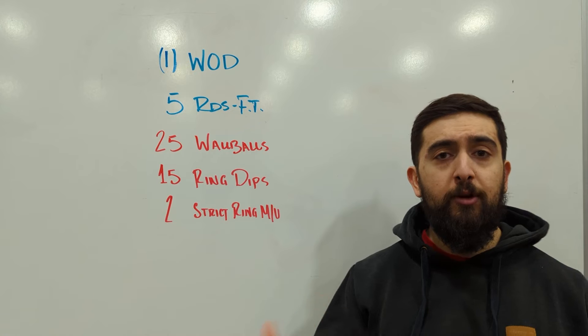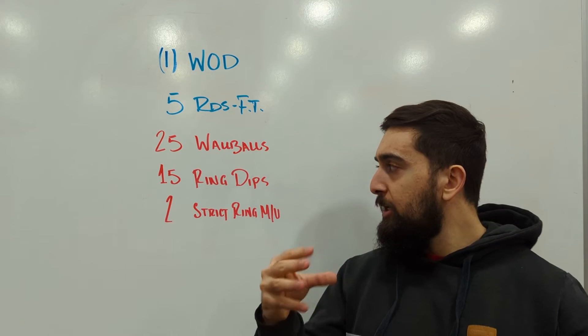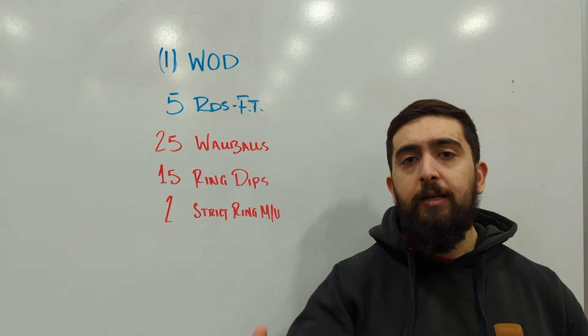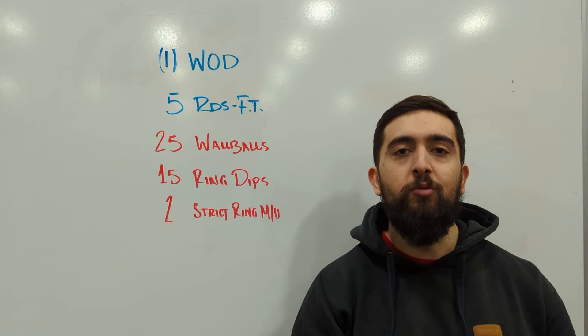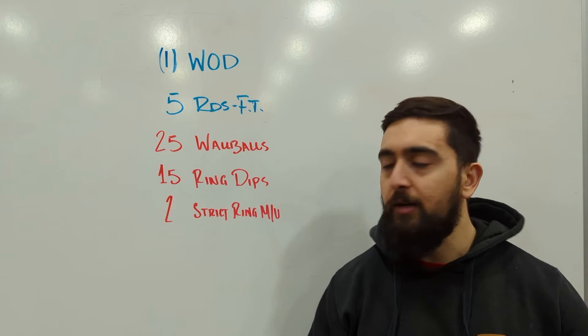Doing five rounds, so break up your reps right off the bat since there's a lot of reps in each movement so that you can stay consistent and get the most out of this workout today, which is building muscle endurance in the lower body and in the upper body.